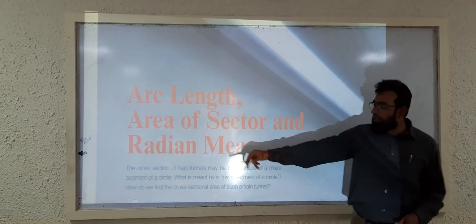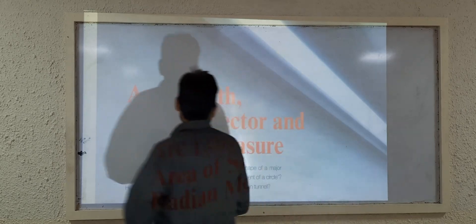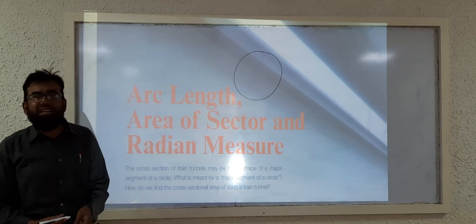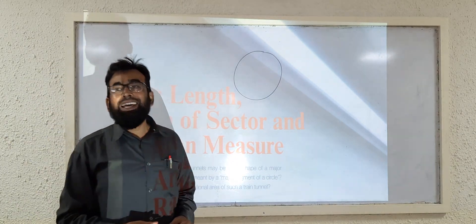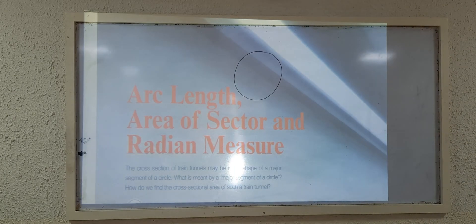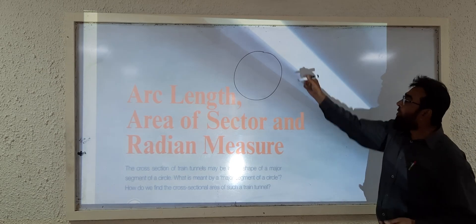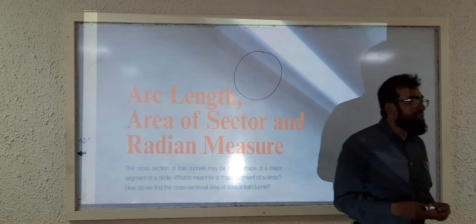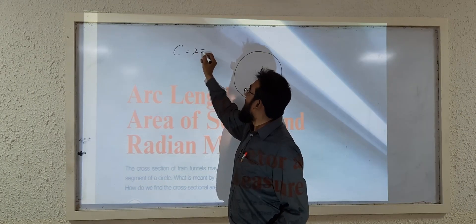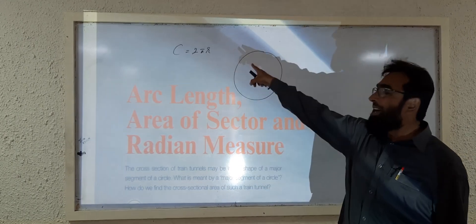Arc length, area of sector, and radian measure. Arc length is the part of the circumference of the circle. While finding the arc length, you must know the formula for the circumference of a circle, which is 2πr.